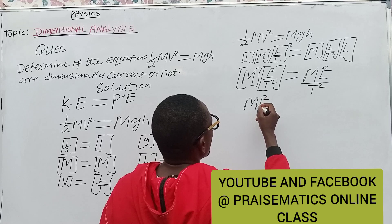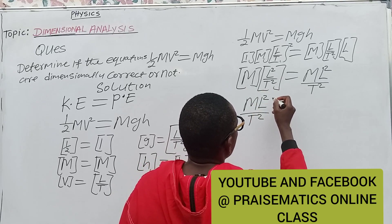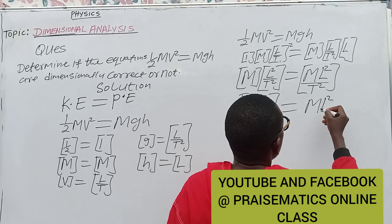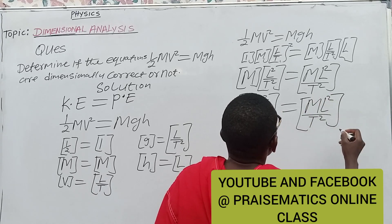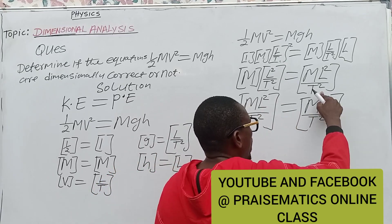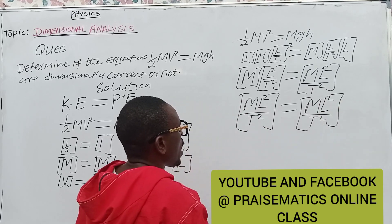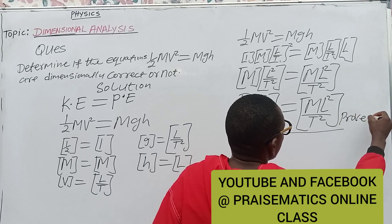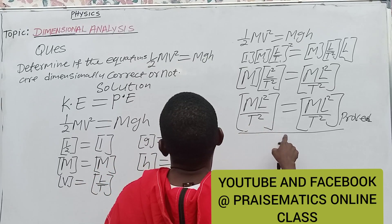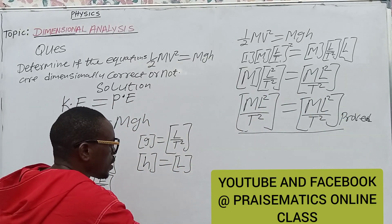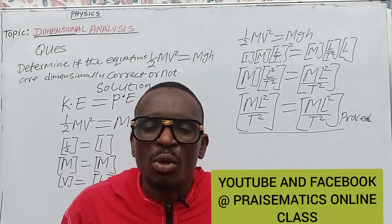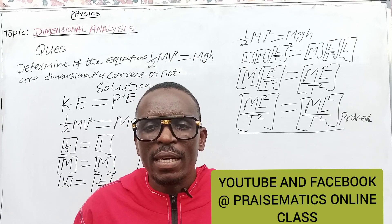So we have the left side as ML²/T², which is equal to the right side ML²/T². You can see that M¹L²T⁻² equals M¹L²T⁻², and that is the answer. Hence, we can say that the equation is dimensionally correct. That is how to prove it. Thanks and God bless you. Remember to subscribe to my YouTube channel, Prismatics Online Class, and also to my Facebook. Please remember to share, like, and comment. Bye!